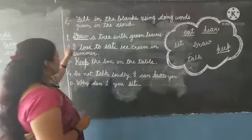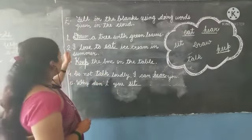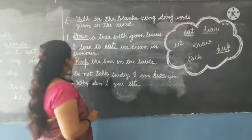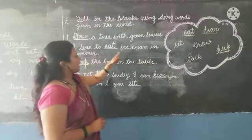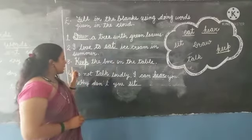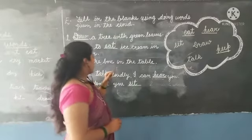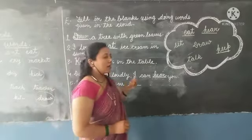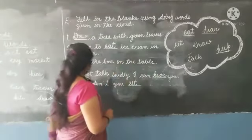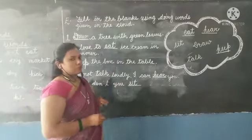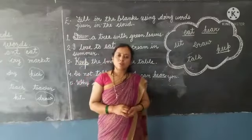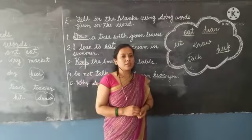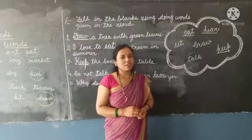Let's read these sentences once again. One: Draw a tree with green leaves. Two: I love to eat ice cream in summer. Three: Keep the box on the table. Four: Do not talk loudly, I can hear you. Five: Why don't you sit. That is all for today. Till the next video, keep learning, keep studying, be healthy. Thank you.